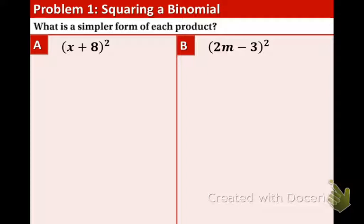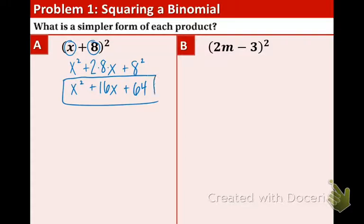First thing that you want to do is take the x, the first term, and square it. Leave some space. Take the last term and square it and then double the product of the numbers inside. So we get x² + 16x + 64. And there's the answer. It's nice and quick.